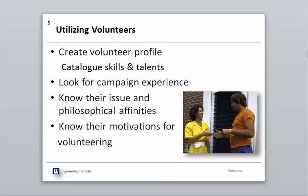Know your volunteers' issues and philosophical affinities. If you've got people sitting around the table stuffing envelopes, you don't want the most adamant pro-lifer in your group sitting beside the most notorious pro-choice advocate in your community. Keep them separated. Knowing something about their issue affinities will help you keep people working together more comfortably. Know their motivations — people are not always as philosophical as we are. Sometimes they're motivated simply because they like our candidates, sometimes because they hate the other candidates. People are not always very sophisticated about political issues, so it helps to know why they're volunteering so you can keep them coming back.